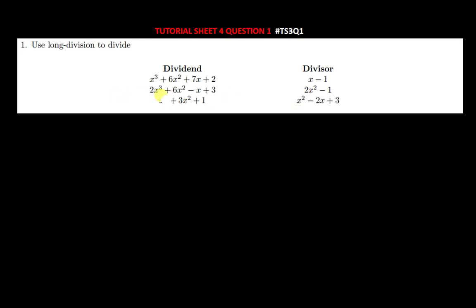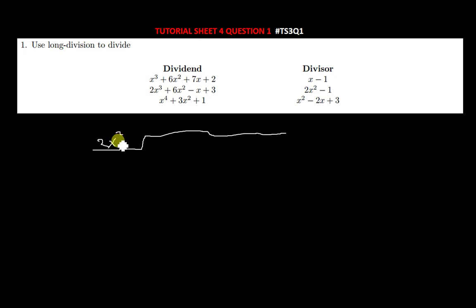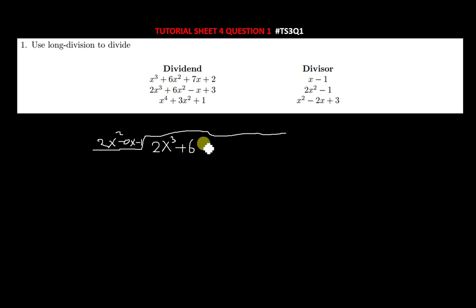That was the solution for question one. Let's move on to the next question. We have the divisor 2x² − 0x − 1, and the dividend is 2x³ + 6x² − x + 3. I like putting the 0x term in because it really helps when you're dividing.